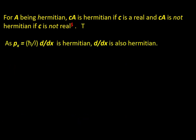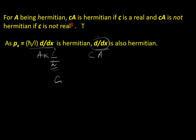p_x = ℏ/i · d/dx is Hermitian. Is d/dx also Hermitian? Here if p_x is your a, then c = i/ℏ, which is not real. So d/dx is not Hermitian even though ℏ/i · d/dx is Hermitian.